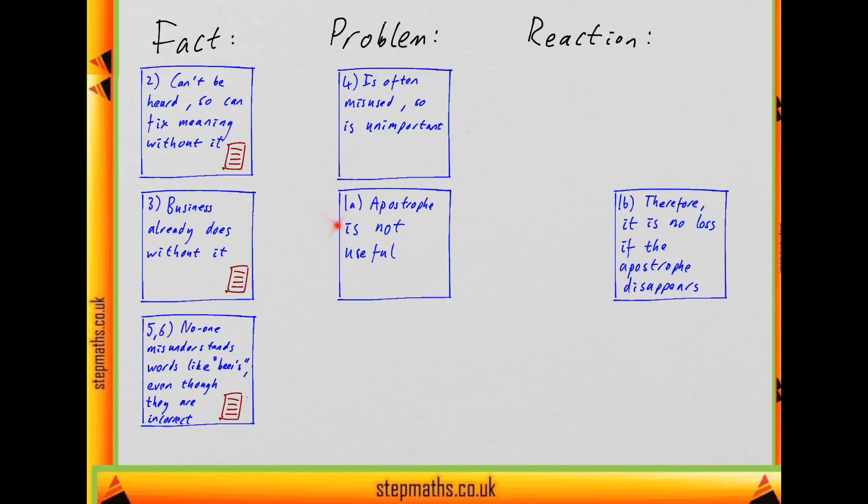Whereas both of these statements of the problem with apostrophes that are not particularly useful are reasons to believe that it's no loss if it disappears. This is the writer's reaction to the problem that's being set up. It's supported by everything else in the argument, so that's going to be the main conclusion.